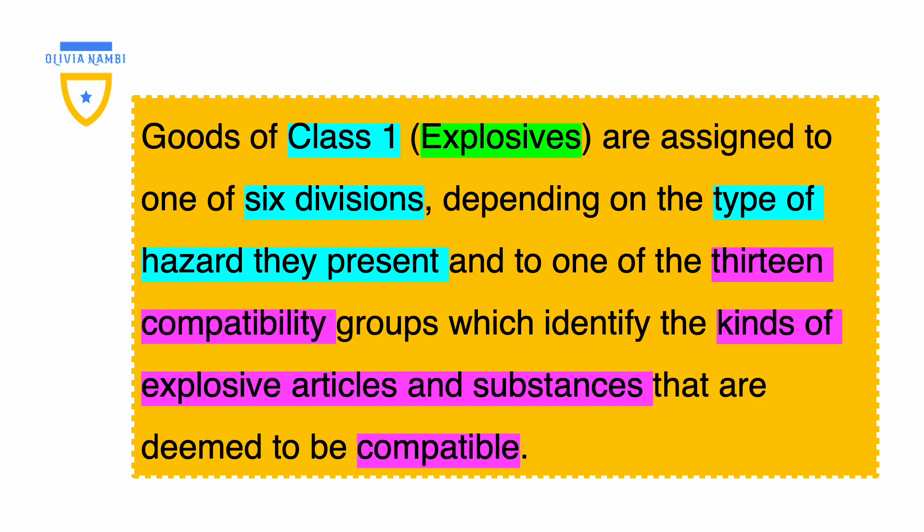Compatibility groups for explosives. Reference: IATA DGR, the 64th edition. Explosives are assigned to one of six divisions depending on the type of hazard they present, and to one of the 13 compatibility groups, which identify the kinds of explosive articles and substances that are deemed to be compatible.